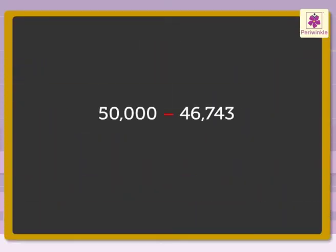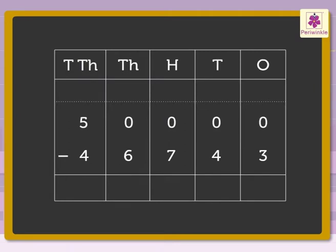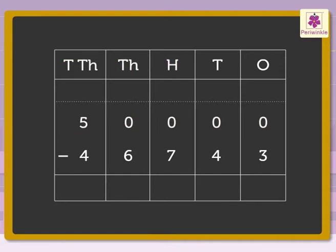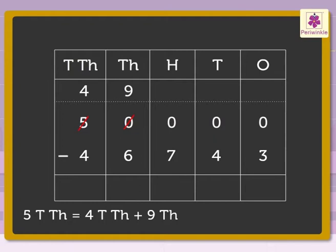Here we have to subtract 46,743 from 50,000 to find the answer. We cannot subtract the digits in the thousands, hundreds, tens and ones places as there are zeros in the minuend. To be able to subtract, we need to regroup the number 50,000 in ten thousands, thousands, hundreds, tens and ones. Thus, five ten thousands is regrouped as four ten thousands plus nine thousands plus nine hundreds plus nine tens plus ten ones.